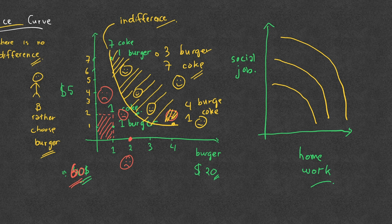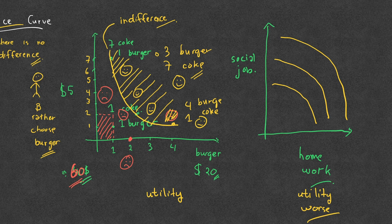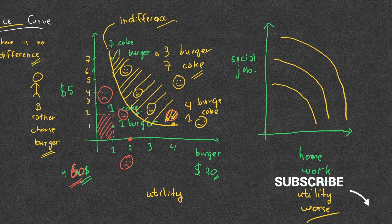This represents something that gives you utility you like, and this other axis represents utility that makes you feel worse as the amount gets higher and higher. After this, we will talk about where the budget constraint meets the indifference curve. Hope it helped — keep following the next lesson!